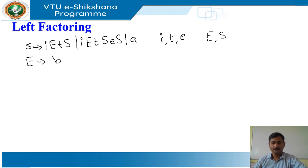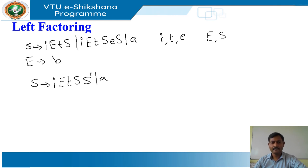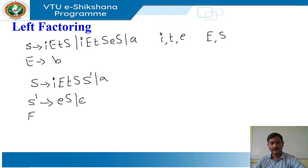After left factoring, the grammar becomes: S derives i E t S S' | a, S' derives e S | epsilon, and E derives b.